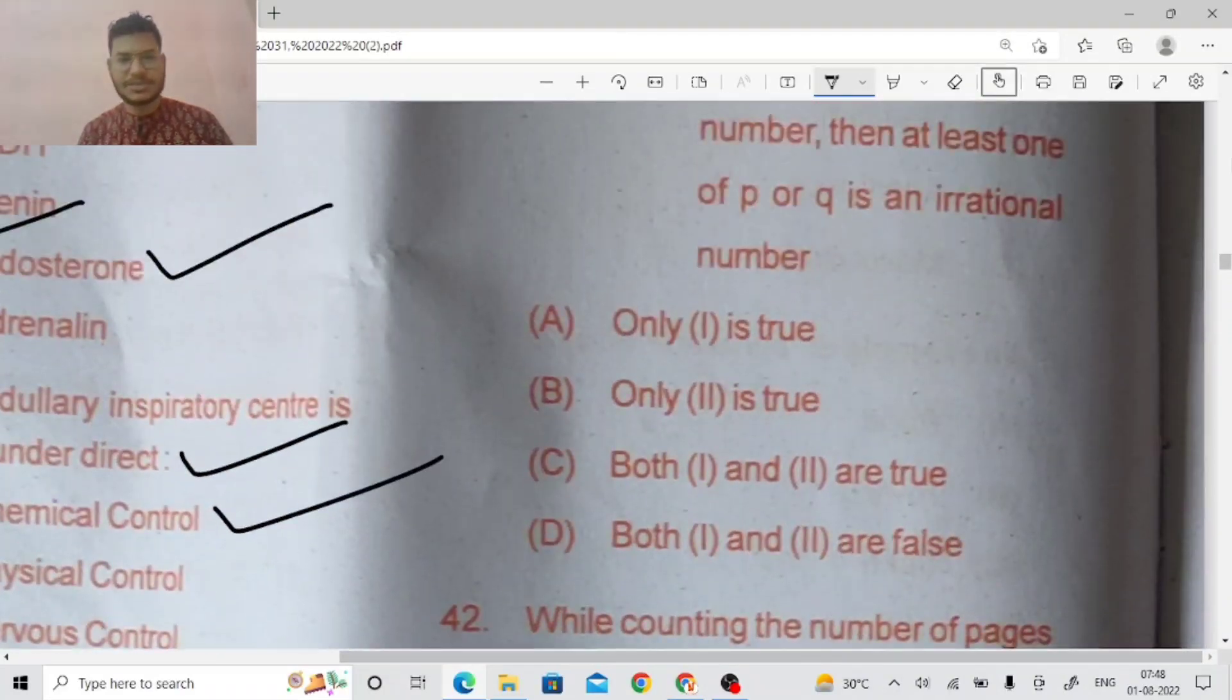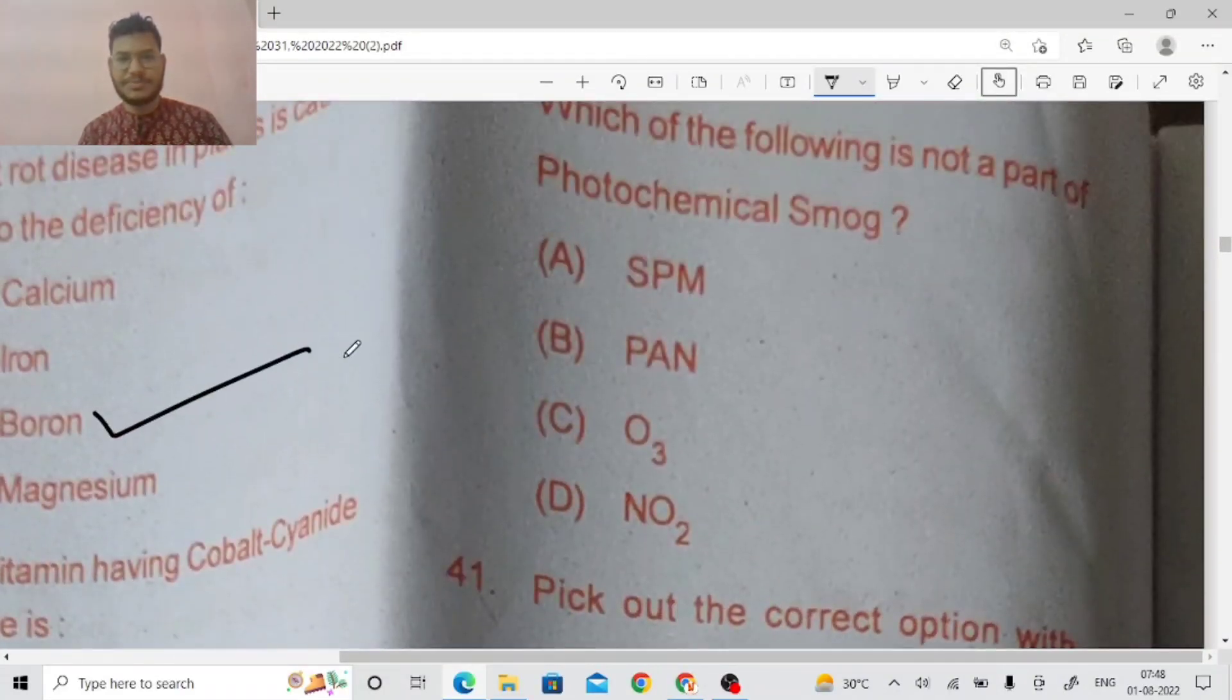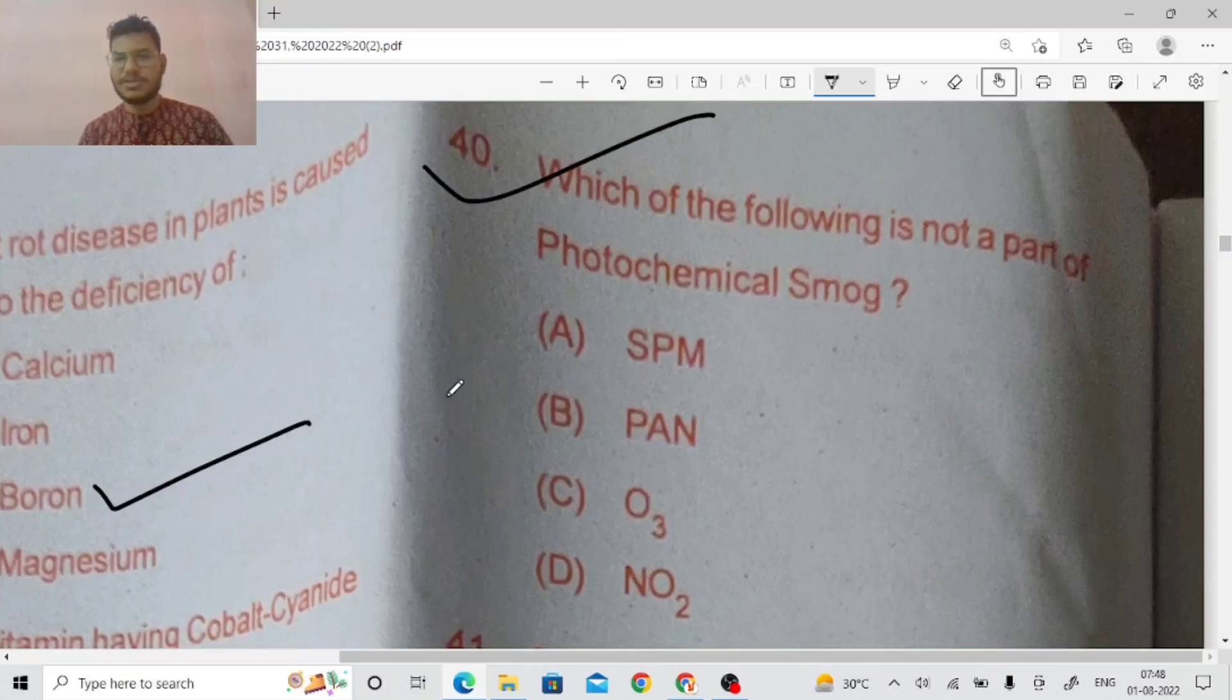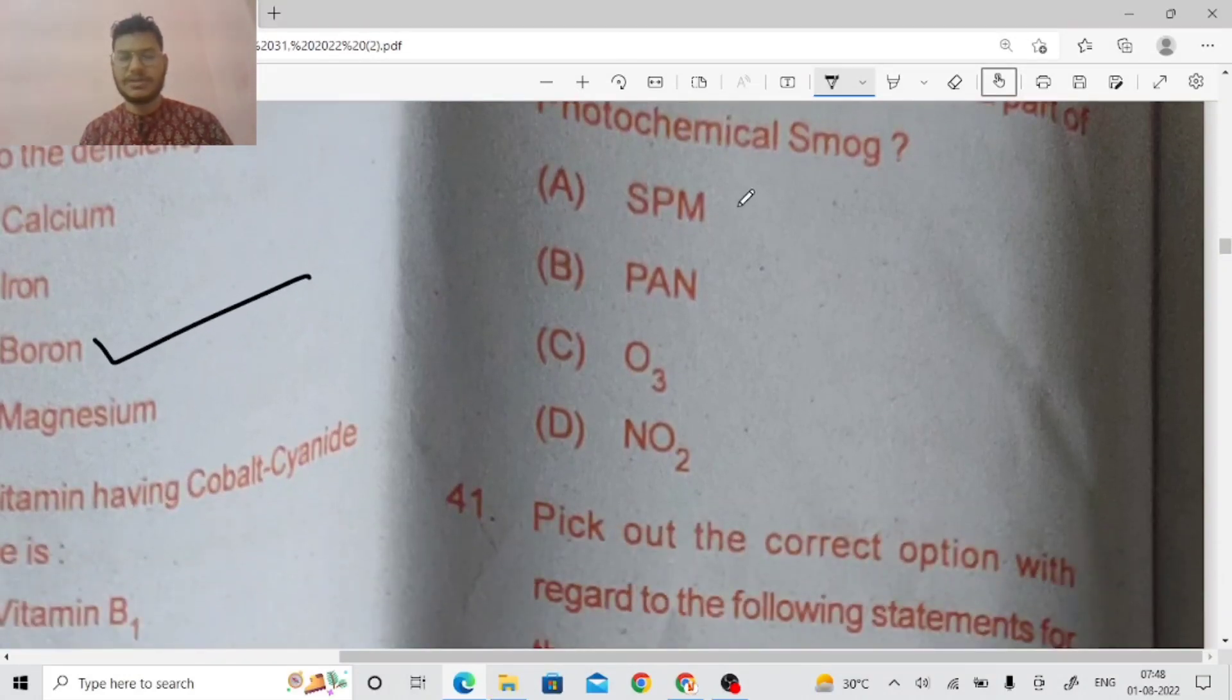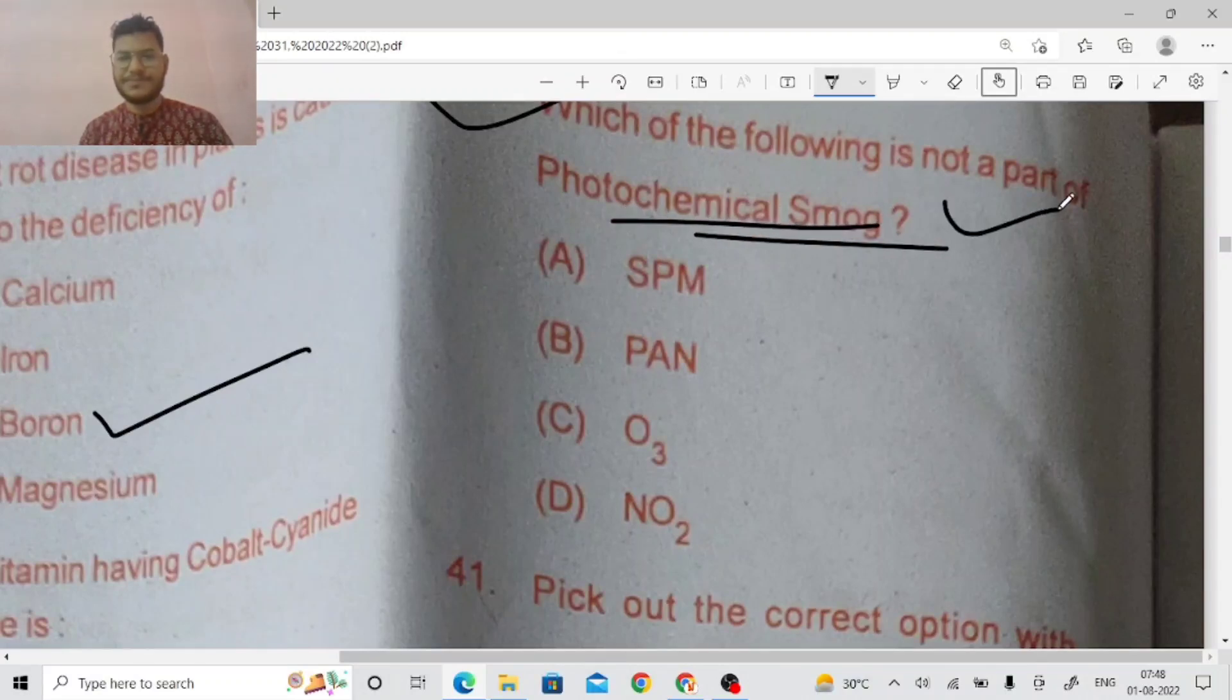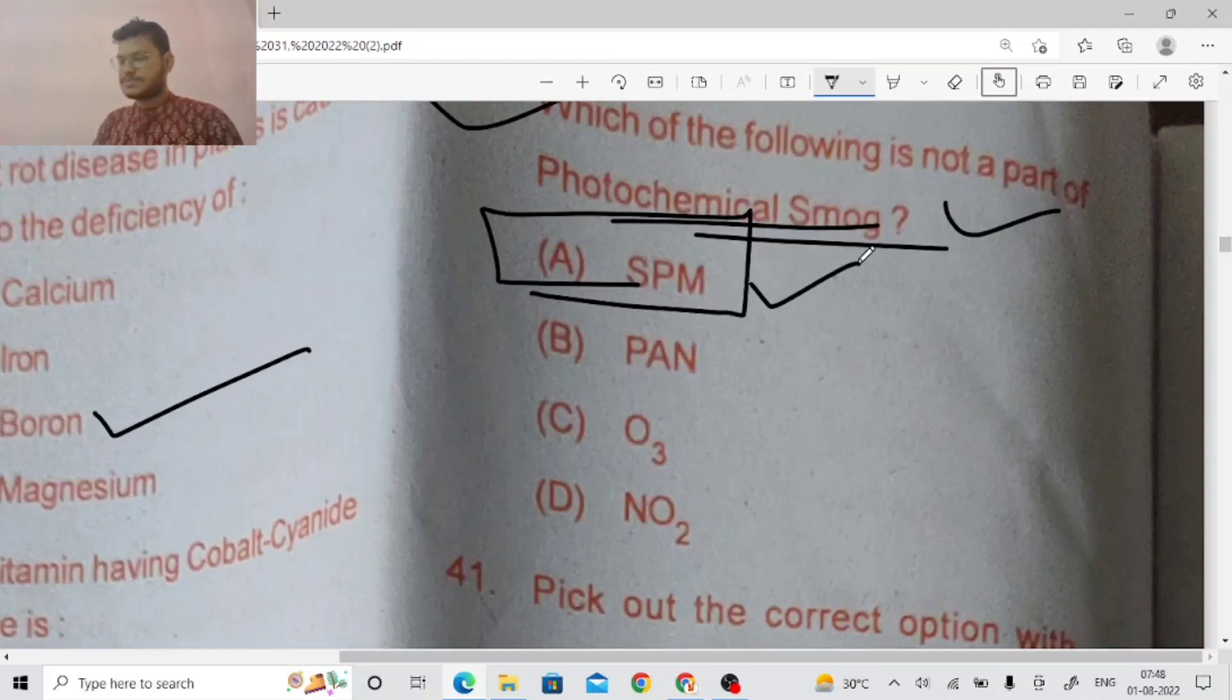Next, the last question from biology part. Which of the following is not a part of photochemical smoke? It is suspended particulate matter. Suspended particulate matter is the right answer because photochemical smoke contains PAN, ozone, and nitrogen dioxide. So right answer will be A. So this is biology part, Beard and Trance Science 2022. Thank you very much friends.